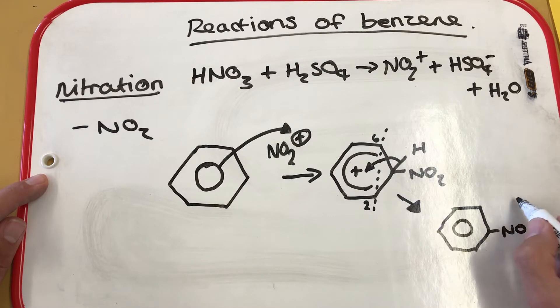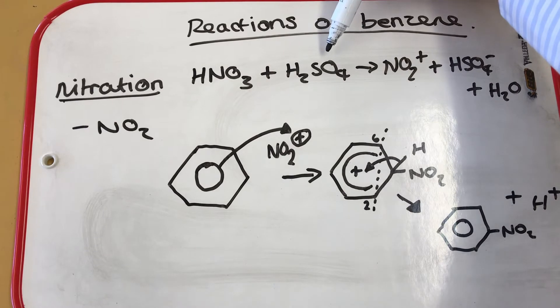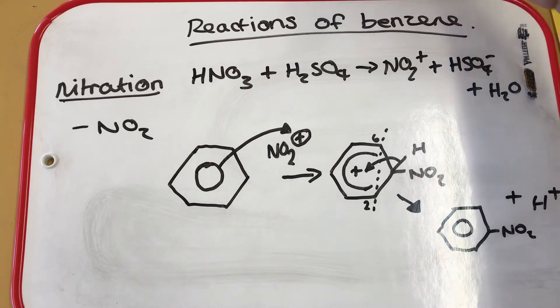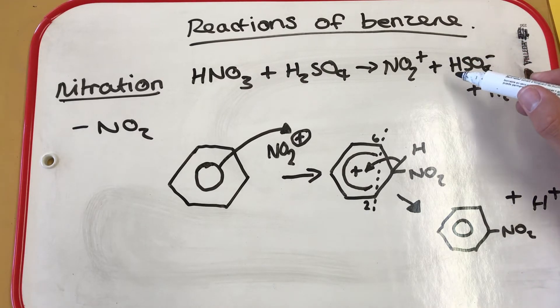And the H+ ion, the proton is also released. This is not the end of the reaction because I said at the beginning that the sulfuric acid is going to act as a catalyst. Now, if you remember back, catalysts are not used up in chemical reactions. They simply offer an alternative pathway with a lower activation energy. So this is where the HSO4- comes back into play.